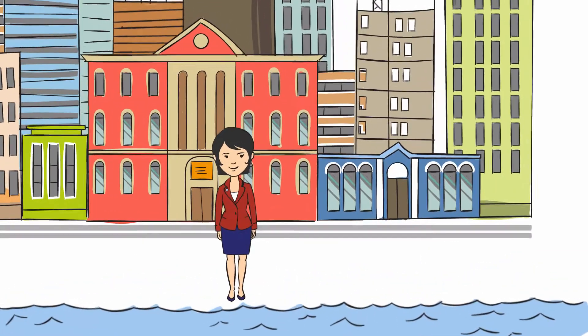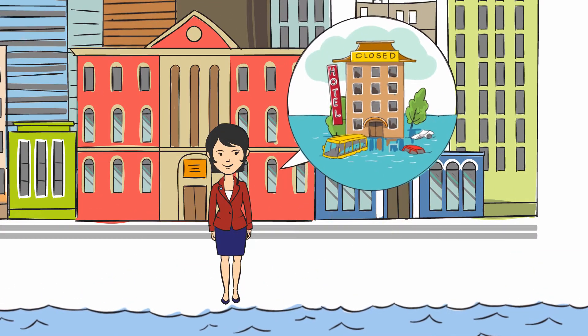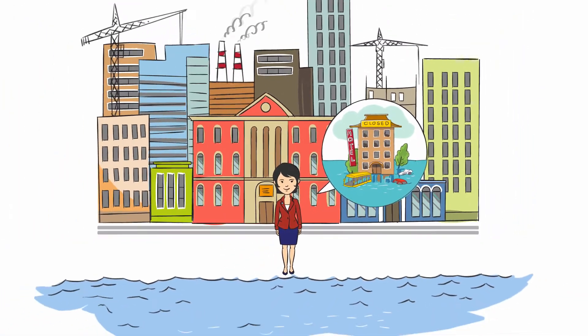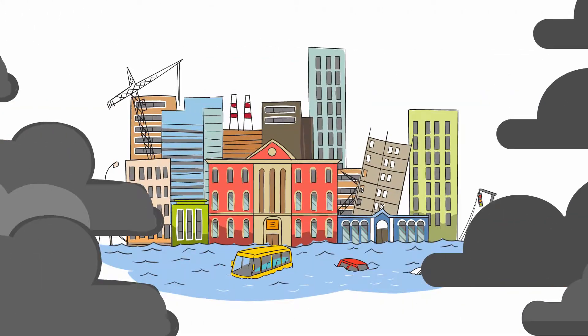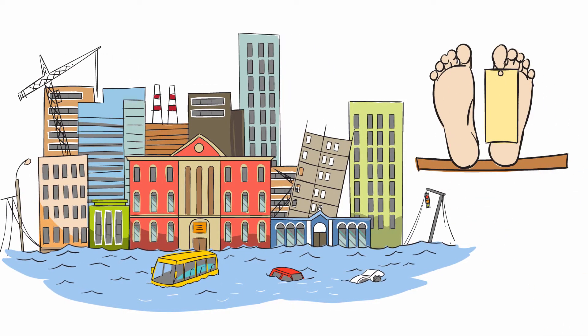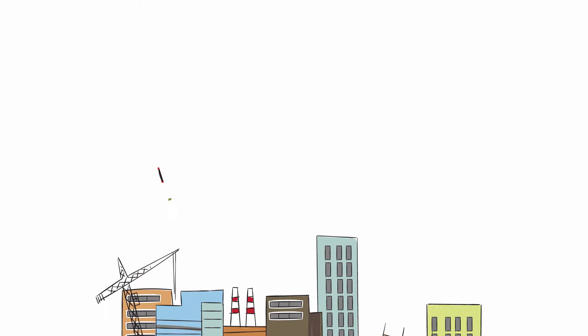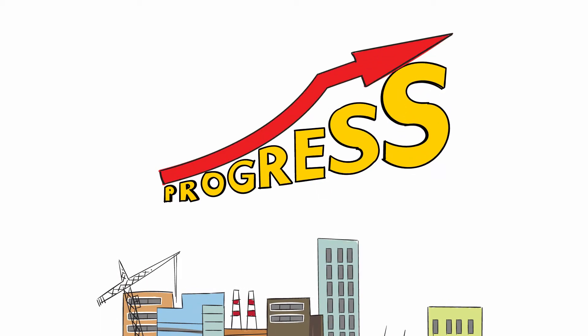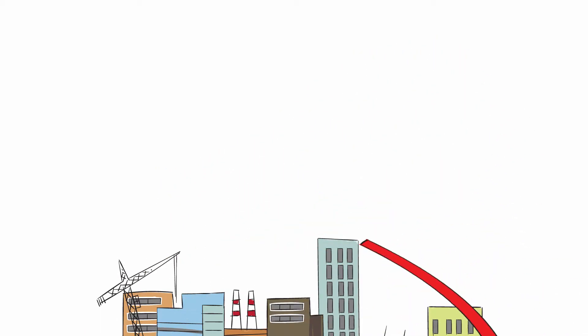As mayor, Emma deals with floods as one of the impacts of climate change. Flooding affects the day-to-day activities of the city and damages properties and even claims lives in extreme cases. This does not only slow down growth and development but can wipe away years of progress made.